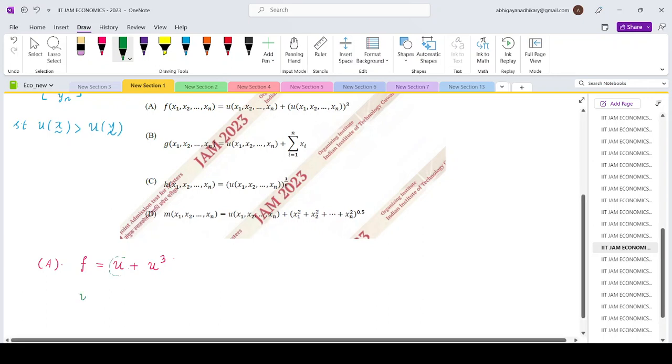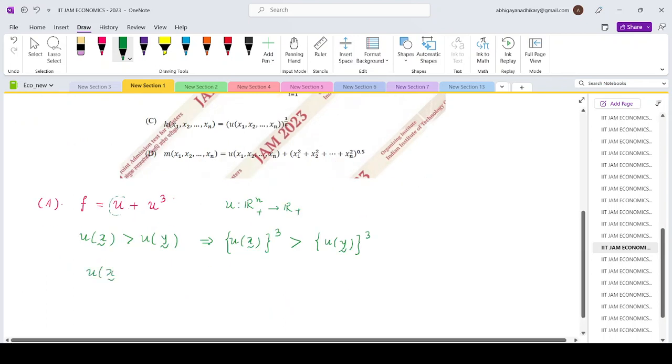Take a look at the first part. U of the bundle X is greater than U of the bundle Y. So that would imply since the utility function is from R n plus to R plus, the cube of this utility function would be greater than the cube of the utility function for this bundle Y. So that would become utility of Y plus U of Y whole cube. So that would mean function of X is greater than function of Y.